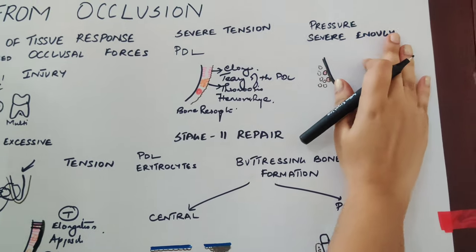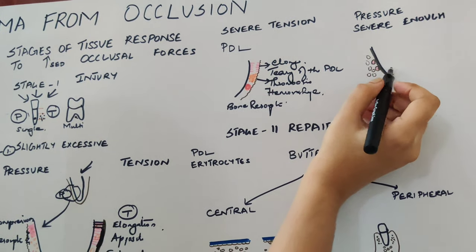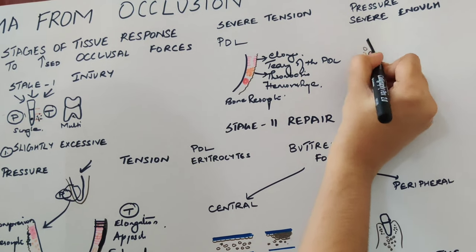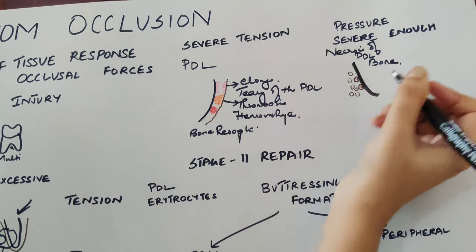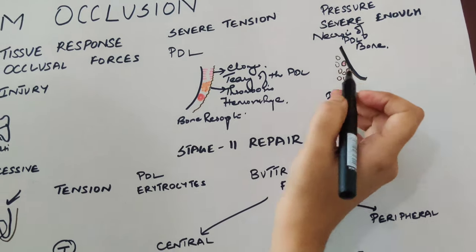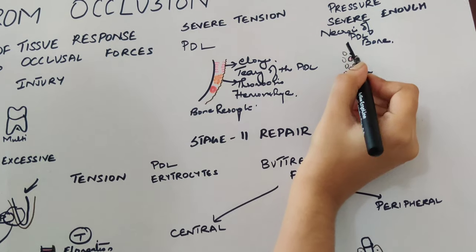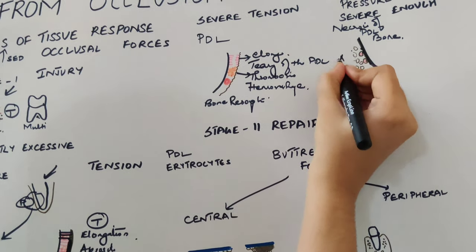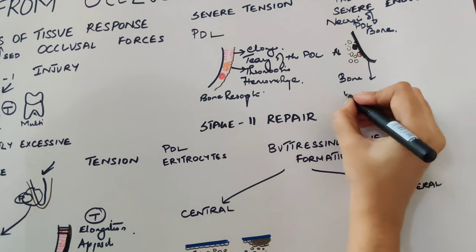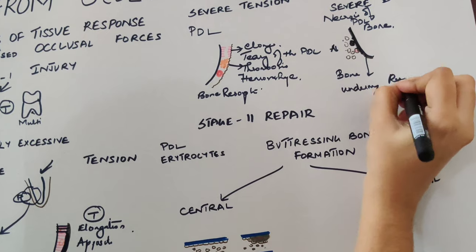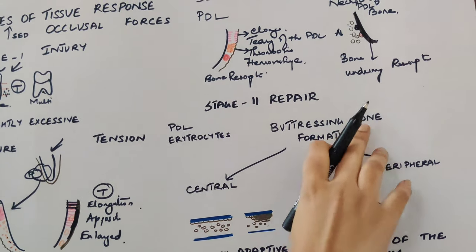When pressure is so severe that the tooth is pushed against the alveolar bone, the bone and tooth come into contact, causing necrosis of both the PDL and bone. Bone resorption then occurs from viable periodontal ligament nearby or from osteoclasts migrating from the marrow spaces of the alveolar bone. This resorption is called undermining resorption because it occurs on the underside of the lamina dura.